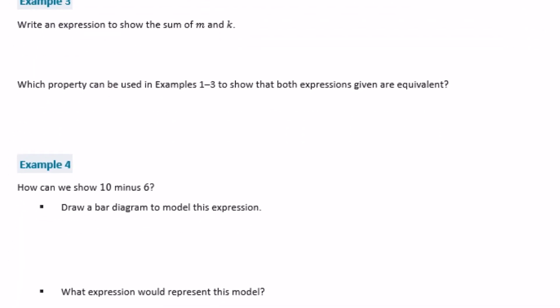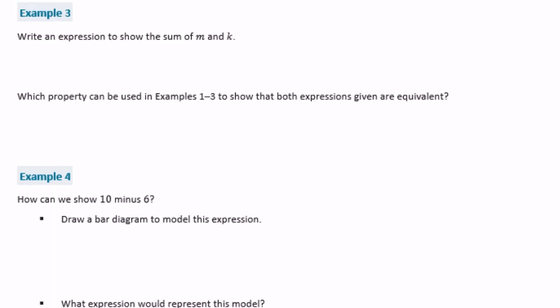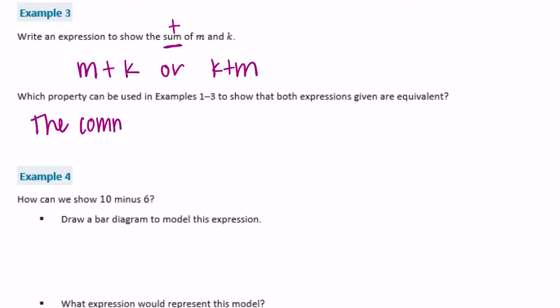Example 3: write an expression to show the sum of M and K. The sum is the answer to an addition problem, so we're adding M and K: M plus K, or you could flip it to K plus M because of the commutative property. Which property can be used in examples 1 through 3? The commutative property of addition.